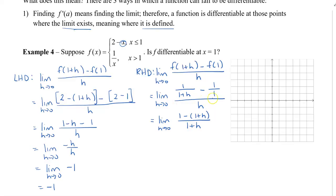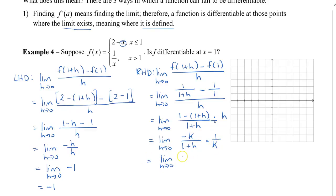Writing this more concisely with divided by h on the right side: 1 minus 1 is 0, leaving negative h over (1 plus h), times 1 over h. The h's cancel, giving the limit as h approaches 0 of negative 1 over (1 plus h). Plugging in 0, we get negative 1. So the right-hand derivative is also negative 1.